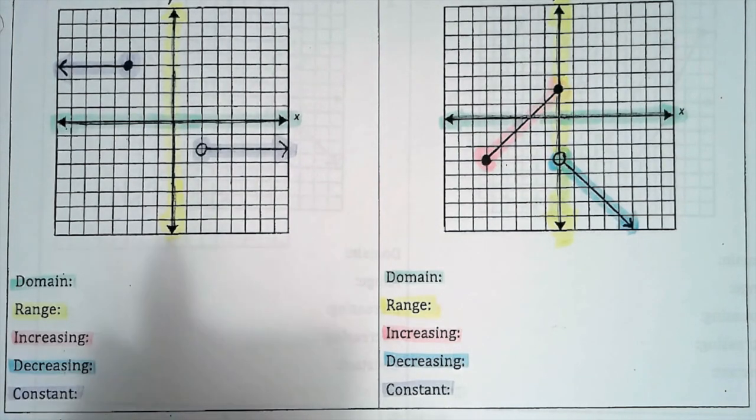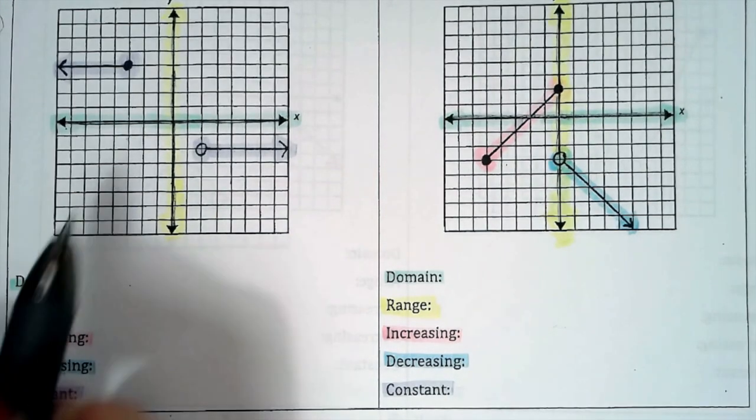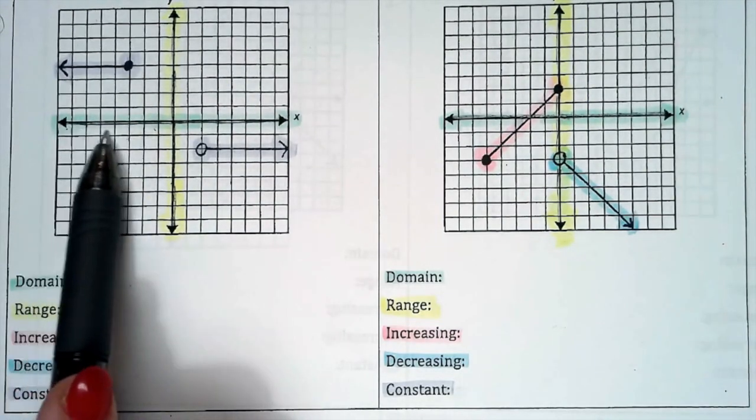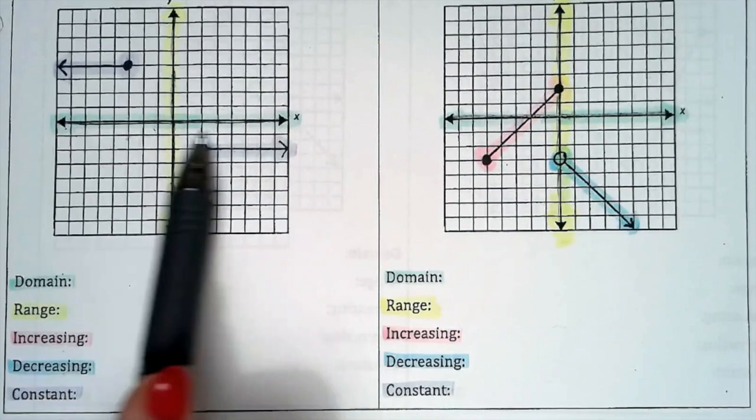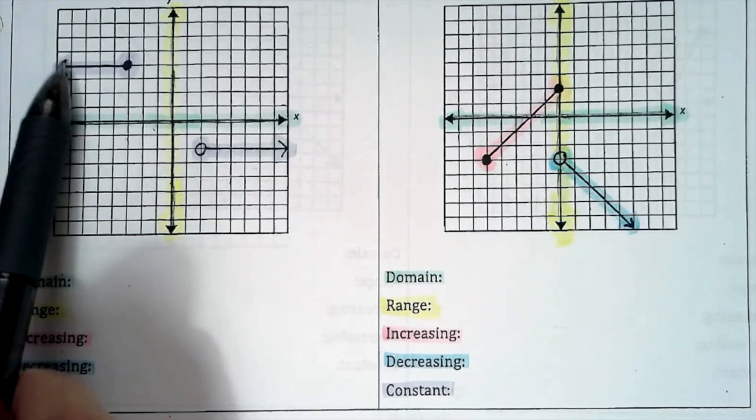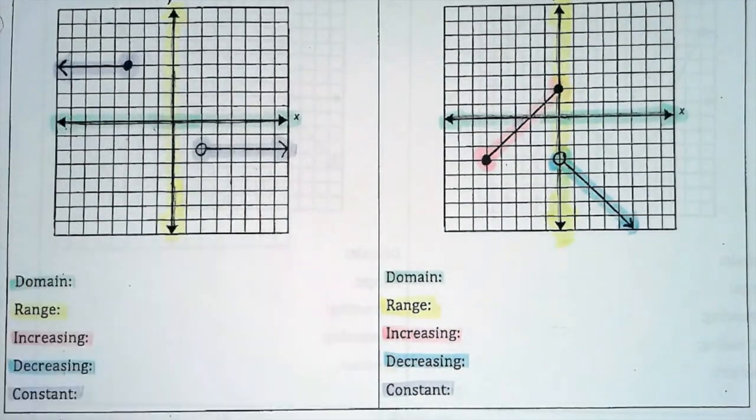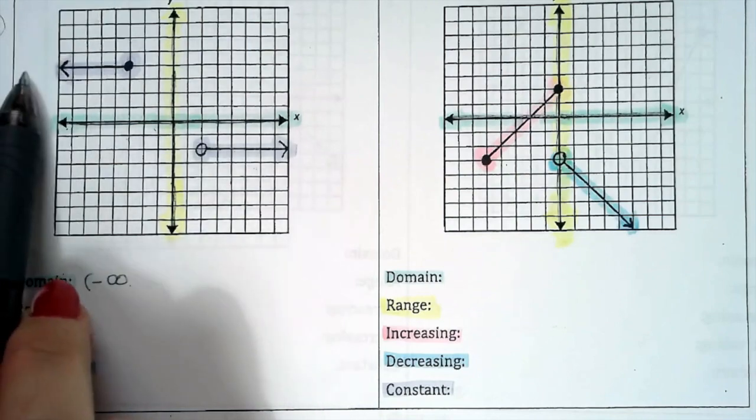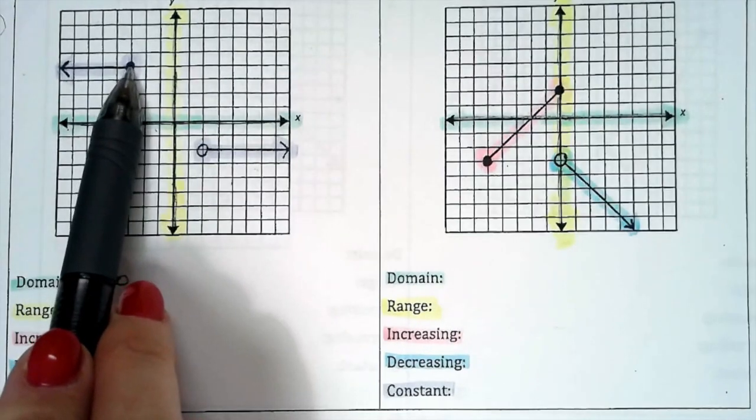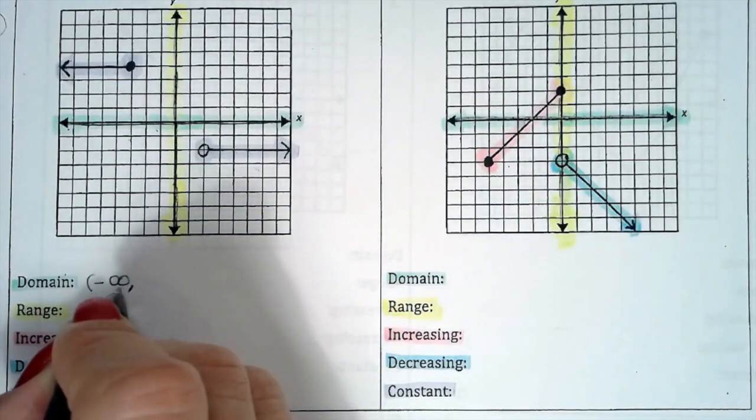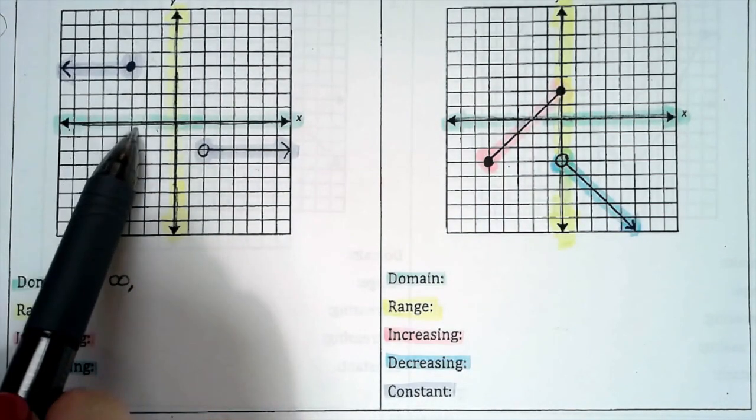We're going to start off by acknowledging the domain and range of this function right here. The domain, which I colored in green, is going to identify all of the x values that are part of the function we're looking at. Since this arrow is pointing all the way to the left, that means that the domain begins at negative infinity. This is going to be continuous up until this point right over there. We use this interval notation, so it's from negative infinity until this x value.